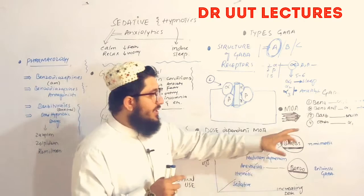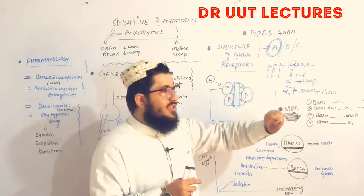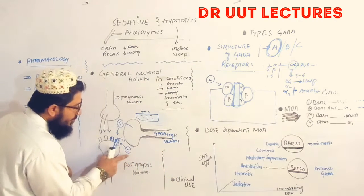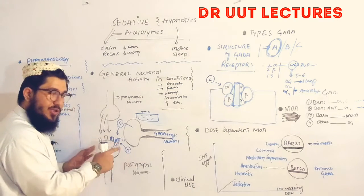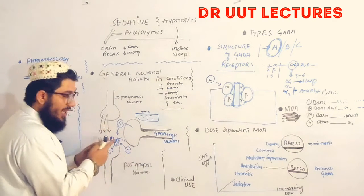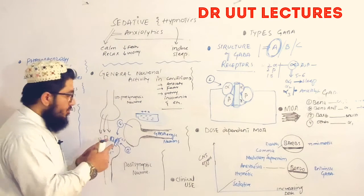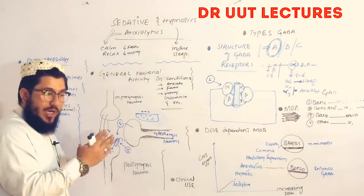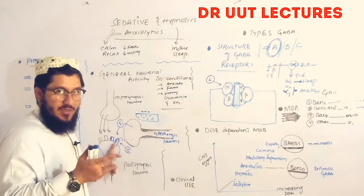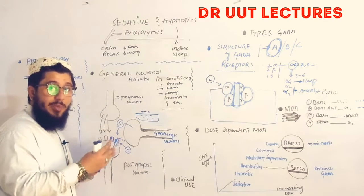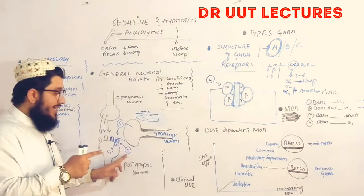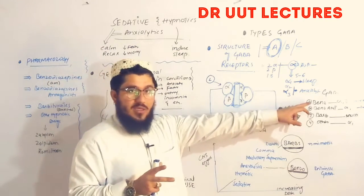Now for barbiturates: they bind to the beta and gamma subunits of the GABA-A receptor. When barbiturates bind, they increase the duration of channel opening. For example, if GABA alone opens the channel for five seconds, barbiturates make the channel stay open for a longer period — perhaps one to two minutes. So barbiturates increase the duration that the ion channel remains open, unlike the repeated opening and closing seen with benzodiazepines.